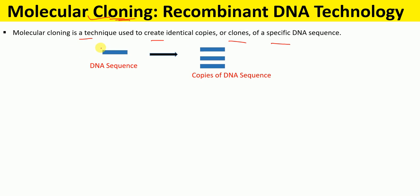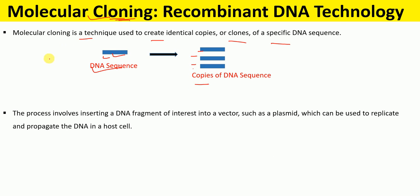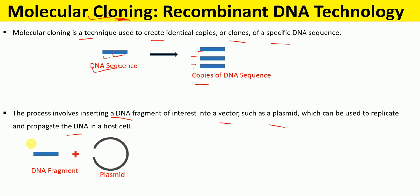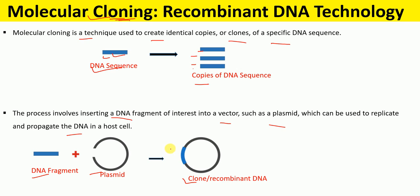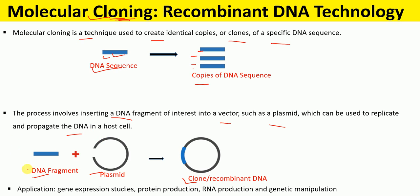As an example, here we have a specific DNA sequence, and when we create multiple identical copies of this particular DNA sequence, this is called molecular cloning. The process involves inserting a DNA fragment of interest into a vector such as a plasmid, which can be used to replicate and propagate the DNA in a host cell, resulting in the formation of a molecular clone or recombinant DNA. Molecular clones are used in gene expression studies, protein production, RNA production, and genetic manipulation.